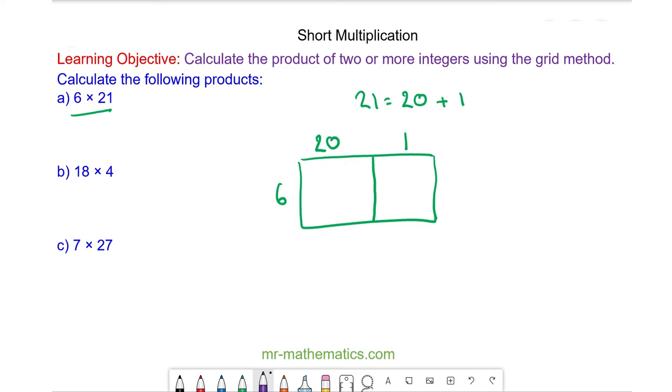It's important to understand that this isn't to scale. So we have 6 times 20 in this section which is 120 and 6 times 1 in the other section which is 6. The total area of our rectangle is 120 and 6 which is 126.